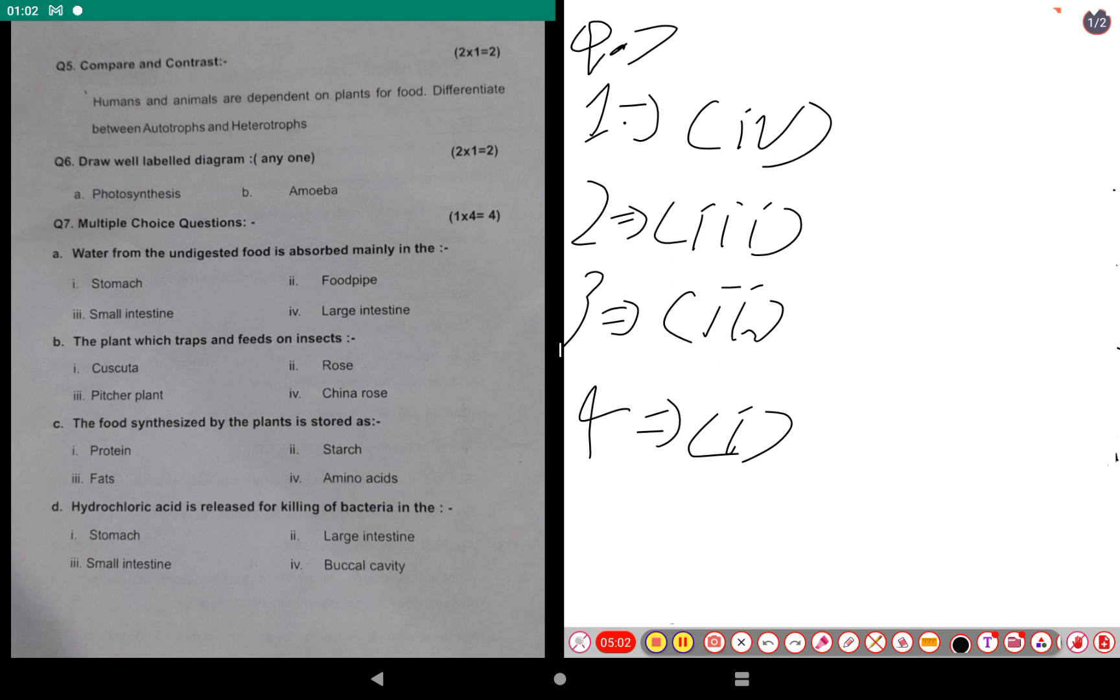The third question's answer is: the food synthesized by the plants is stored as starch. And the final question: hydrochloric acid is released for killing of bacteria in the stomach.